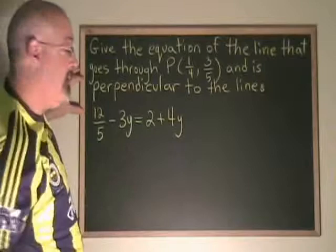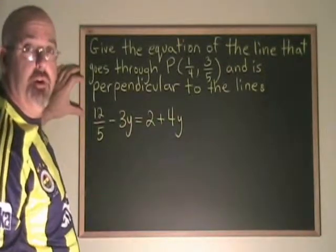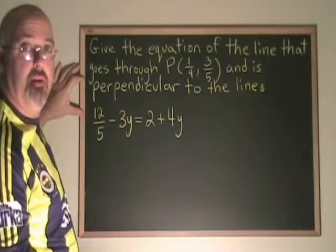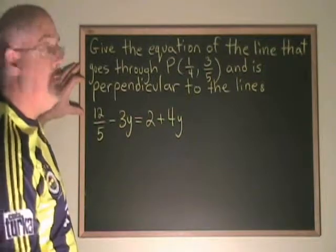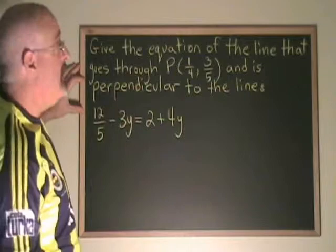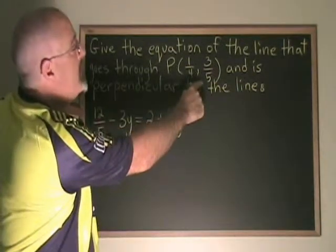The first thing we notice is that this line does not have any x values in the equation. That means it was simplified to y equals a number and it is a horizontal line. Any line that is perpendicular to a horizontal line has to be a vertical line. And any vertical line that goes through this point would have to have the equation x equals 1 quarter.